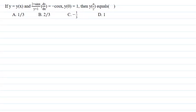Hello everyone, I am your teacher for this question. Let me explain this question to you now. The question says that if y = y(x) and (2 + sin x)/(y + 1) · (dy/dx) = -cos x,